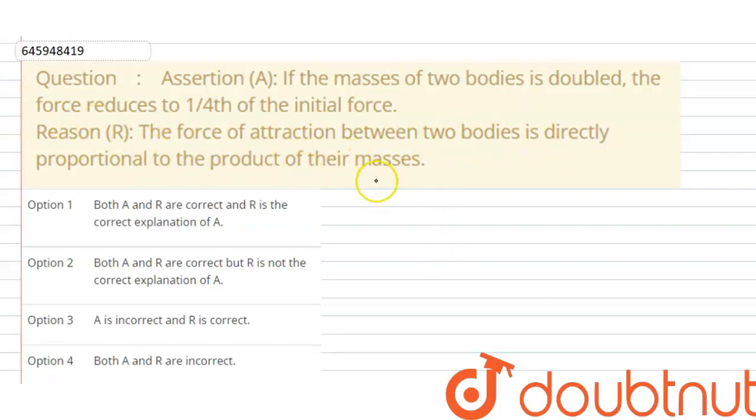First of all, we talk about force of attraction. This is donated F, so is directly proportional to M1, M2 divided by D square. Where M1 is the mass of first body and M2 is the mass of second body and D is the distance between mass M1 and M2. So here proportionality hattane ke liye, here constant define kiya gaya hai. So F is equal Z M1 M2 divided by D square.